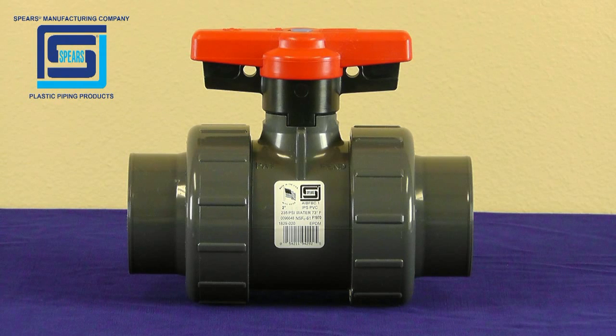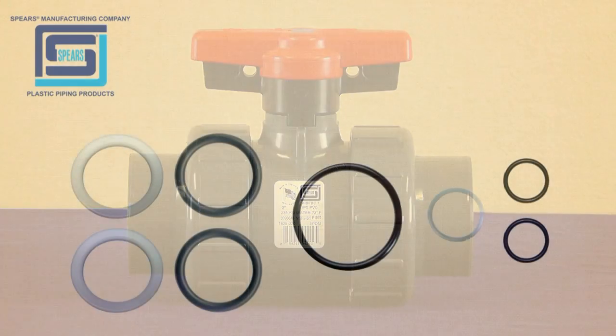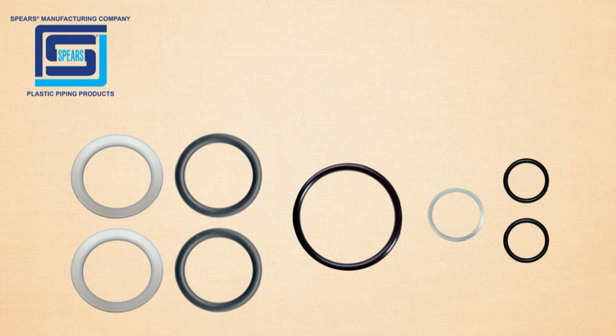Today we'll be demonstrating the installation of a 2-inch TruUnion 2000 industrial ball valve seat and o-ring repair kit. Each kit contains the following replacement components.